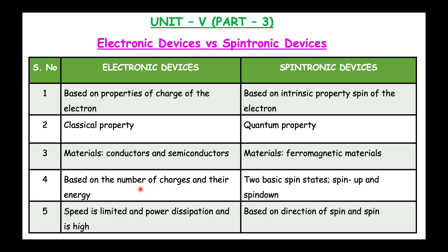The fourth difference is that electronic devices depend upon the number of charges and their energy, but spintronics depends upon the spin-up and spin-down states, that is clockwise and anticlockwise direction. The fifth difference is that in electronic devices the speed is limited, but in spintronics everything depends upon the spin.